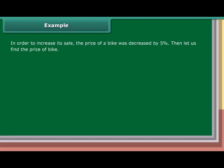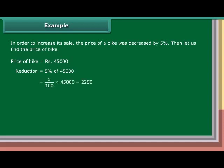In order to increase its sale, the price of a bike was decreased by 5%. Let us find the price of the bike now. Price of a bike is equal to Rs. 45,000. Reduction is equal to 5% of Rs. 45,000, which is equal to Rs. 2,250. New price is equal to Rs. 45,000 minus Rs. 2,250, which is equal to Rs. 42,750.